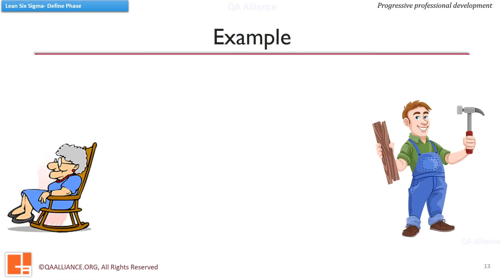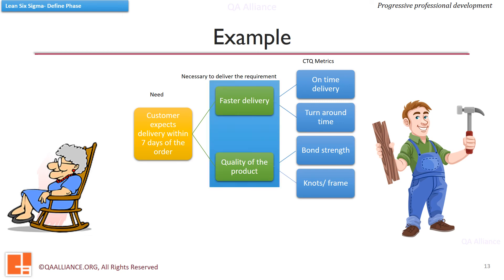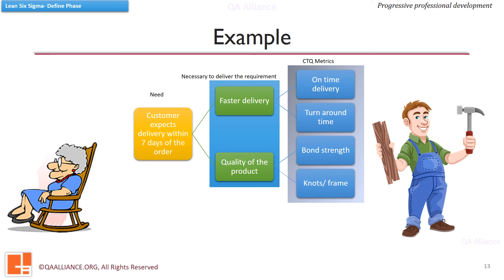In this example, the important outcome is delivery of a comfy chair within seven days of the order. There are many possible drivers, but here we are listing two: faster delivery and quality of the product. For each driver, we then identify the metrics which, if monitored, will help in getting the desired outcome. Branching from the need are the drivers, and branching from the drivers are the metrics. The CTQ tree diagram is a good tool to find out critical to quality metrics in a systematic manner.